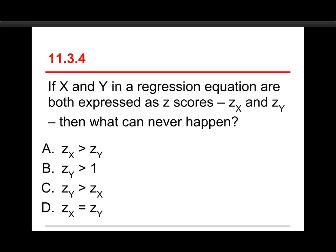Okay, the fourth question is, if X and Y in a regression equation are both expressed as Z scores, so Z sub X and Z sub Y, then what can never happen? And the choices are Z sub X is greater than Z sub Y, or B, Z sub Y is greater than 1, or C, Z sub Y is greater than Z sub X, or D, Z sub X is equal to Z sub Y.